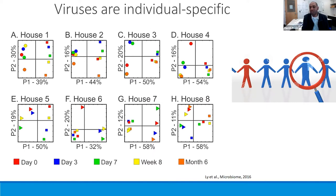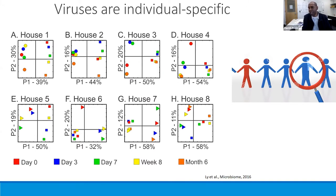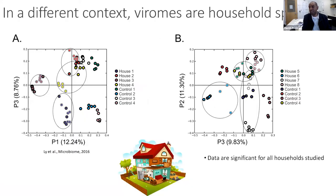We looked at their saliva and feces and asked basic questions — can we tell people apart? It turns out we can tell individuals apart by looking at their virome. Not only can we tell them apart by looking at their mouth or gut virome, but at every single time point, because we did this study longitudinally over six months. Our viruses paint a picture of who we are. You could tell exactly who that individual is over time — it would serve as a great forensic technique, though it's too expensive and cumbersome.